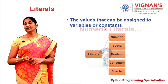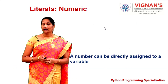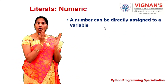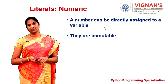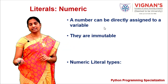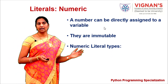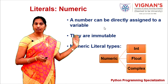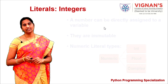Python provides various numeric literals. Any number that can be assigned directly to a variable or constant is recognized as a numeric literal, and they are immutable — they cannot be changed during program execution. Numeric literal types are integer, float, and complex.